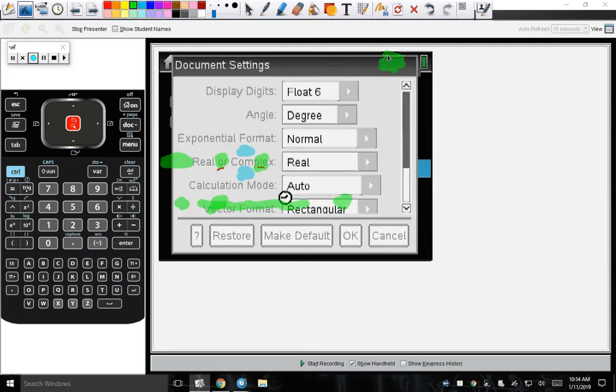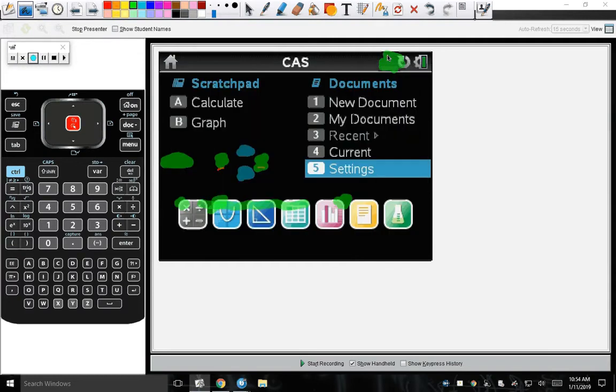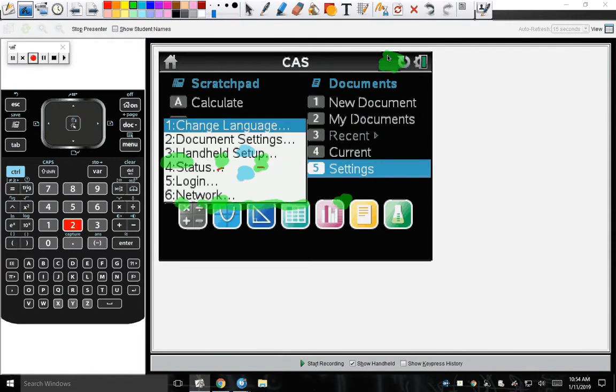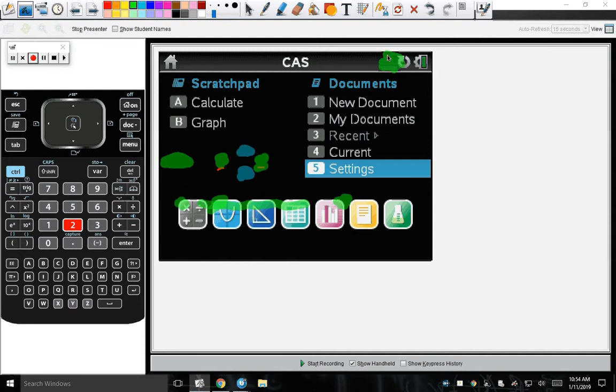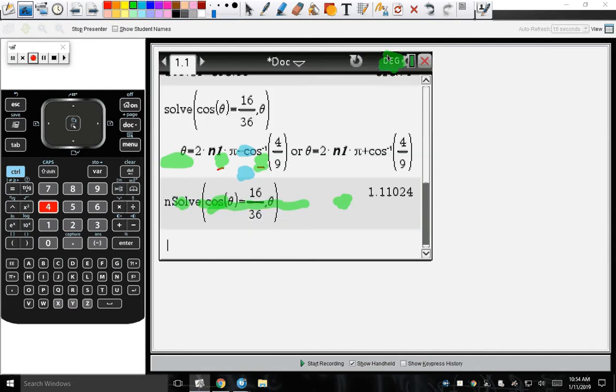If you don't make it your default, it won't stay in degree mode. And if I wanted to change it back, you just press 5-2, and then change it back to radian. Because you're going to have to do this throughout this semester, going back and forth. Let's press 4 to go back to our current document.